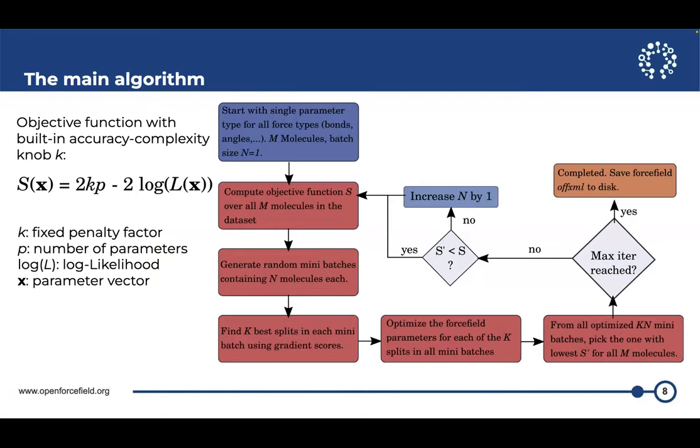So now that we basically know how to split things, we need to put this into a larger context. So we are starting out by saying we need the first thing is an objective function. The objective function is the log likelihood. So that tells me how accurate is my model. And then I'm including a penalty term that says how complex is my model. So I want to tune the complexity of the model represented by a number of parameters against the accuracy of my model. And there's basically one knob in there that I'm calling k. This is a fixed penalty factor that I can use to tune the complexity of the model against the accuracy.